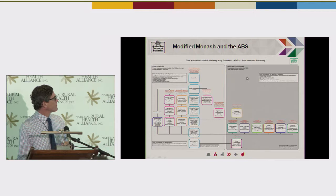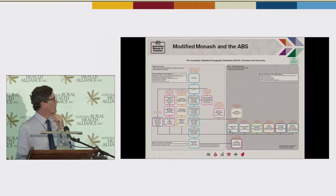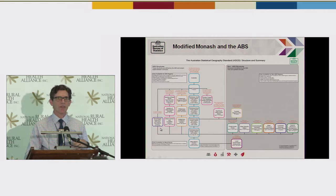For those of you who don't know the ASGS, it's a very complicated diagram. This is our main structure — the statistical area structure. Everything we do is based out of these mesh blocks, and we build pretty much everything up from them. The remoteness classification sits over here and is built from SA1s. Paul did everyone a great service by ensuring he used SA1s to subset the RA2 and RA3 areas, because that just means more data can be produced for those areas.